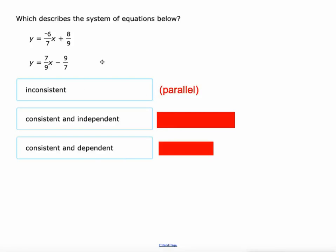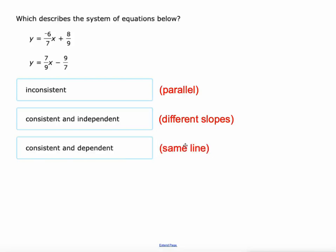Inconsistent means parallel lines — they never cross, there are no solutions because they're parallel. Consistent and independent means that they have different slopes, so there's going to be at least one solution. If they have the same slopes and the same y-intercept, it's because they're the same line, and we call those consistent and dependent — meaning not only is there one solution, there are a lot of solutions, and one is completely dependent on the other.